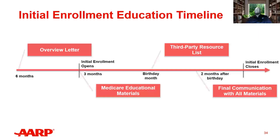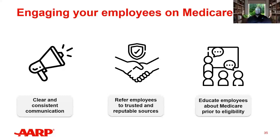Here's a timeline of when employees should expect to receive Medicare-related communications. About six months out, you'll receive an overview letter from Social Security. At about three months out — the start of your initial enrollment period — you'll receive Medicare educational materials and third-party resources. At the end, you'll receive final communication with all your materials. As an employer, make sure you're clear and consistent in your communications, refer employees to trusted and reputable resources, and educate employees about Medicare prior to eligibility.